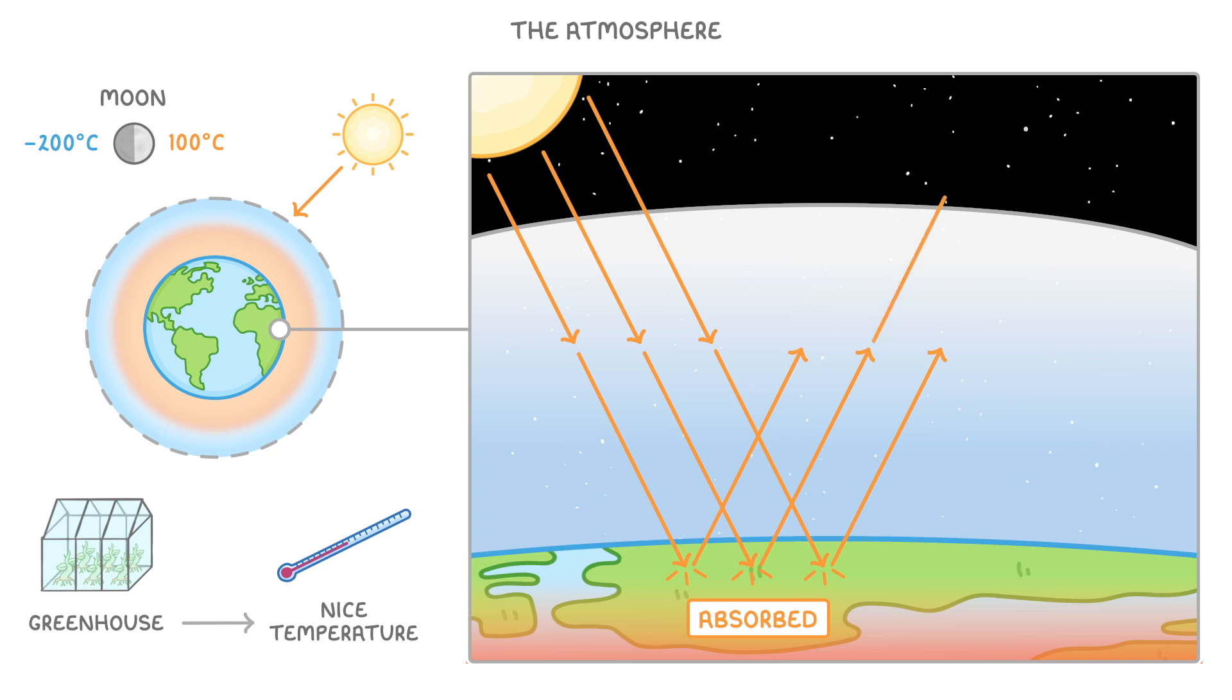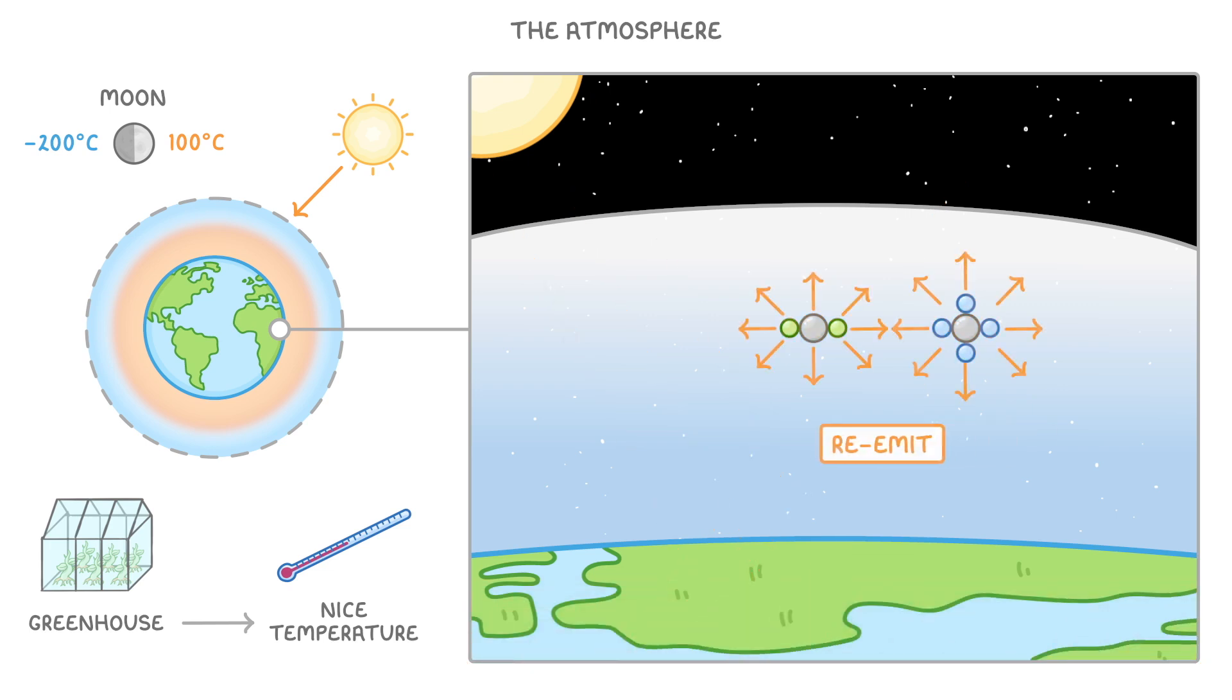Although some of this radiation does make it back to space, most of it actually hits particles of gas in our atmosphere, which will absorb all of the energy. And after a short delay, the particles then re-emit the energy in random directions. This means that some of the energy will be re-emitted towards space, and some towards the earth.